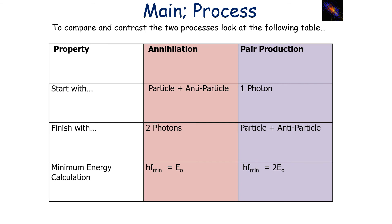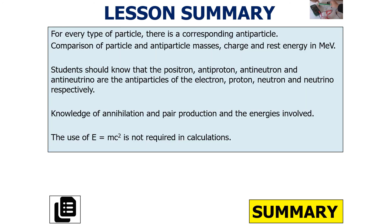To compare and contrast annihilation and pair production: in annihilation, you start with a particle-antiparticle pair and finish with two photons, where hf = E₀ for each photon. In pair production, you start with one photon and finish with a particle-antiparticle pair, with a minimum energy of hf = 2E₀.